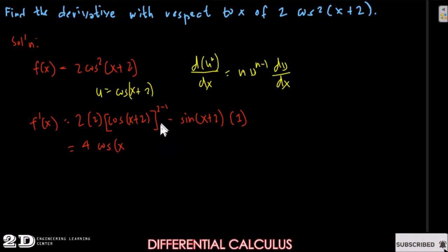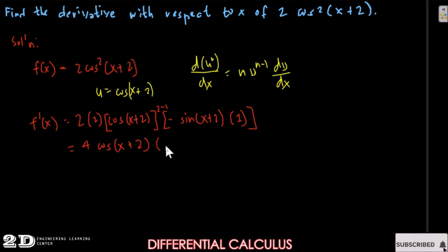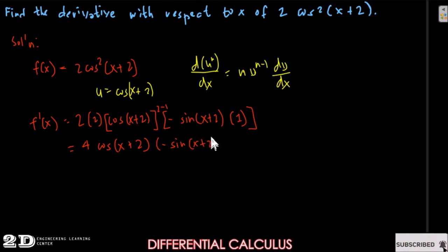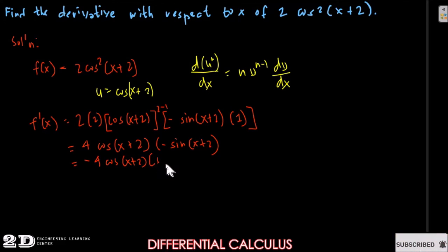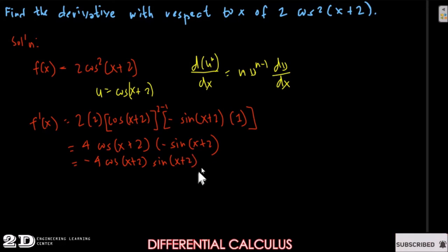So this becomes minus cosine x plus 2 times negative sine x plus 2. Our final answer becomes negative 4 cosine x plus 2 times sine x plus 2, and this will be our answer.